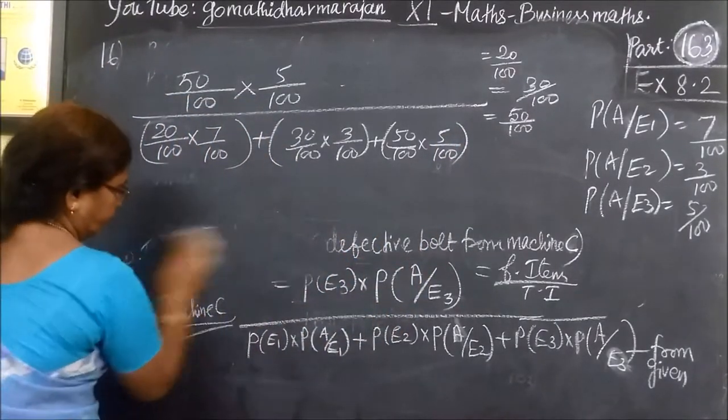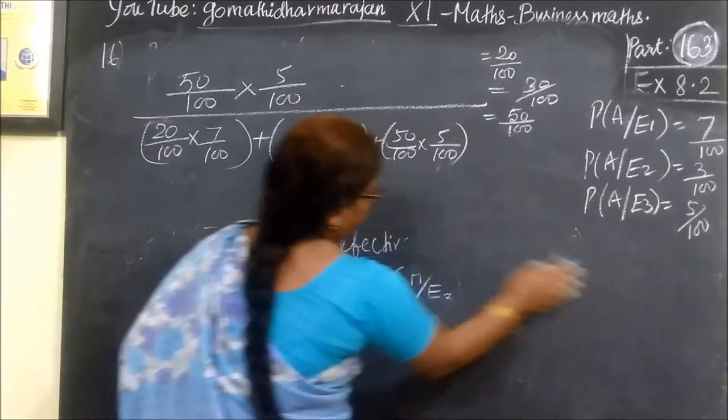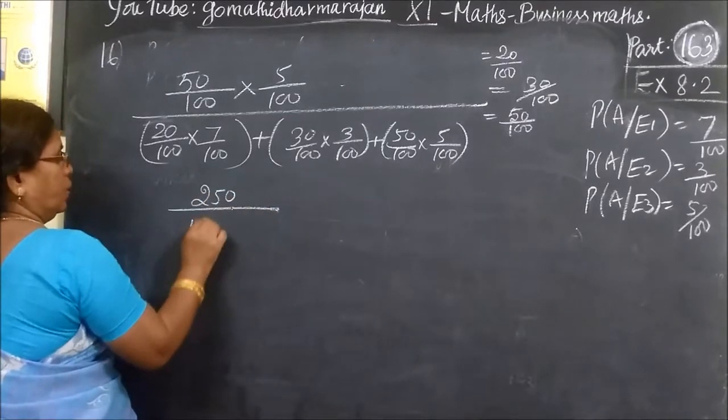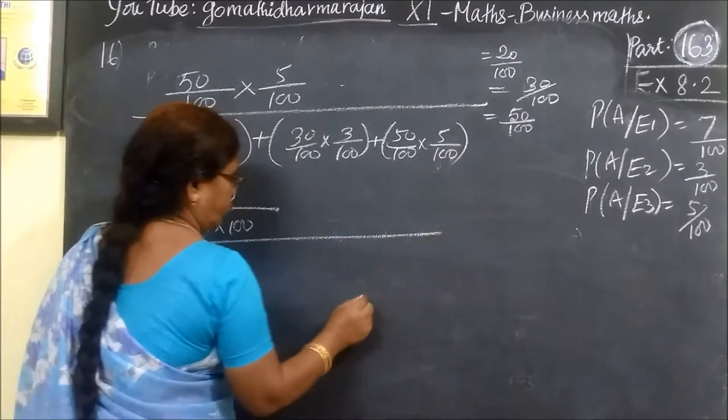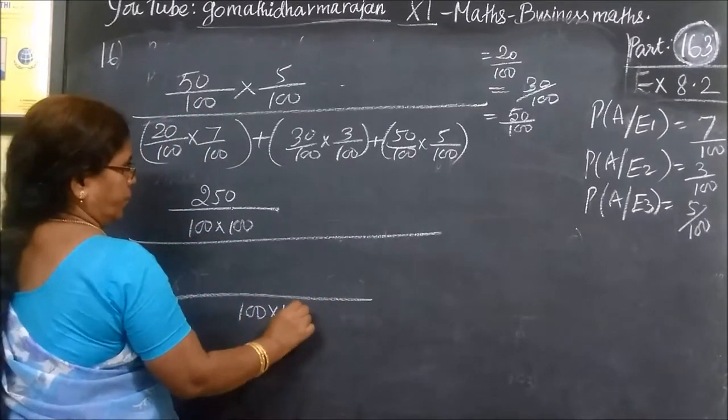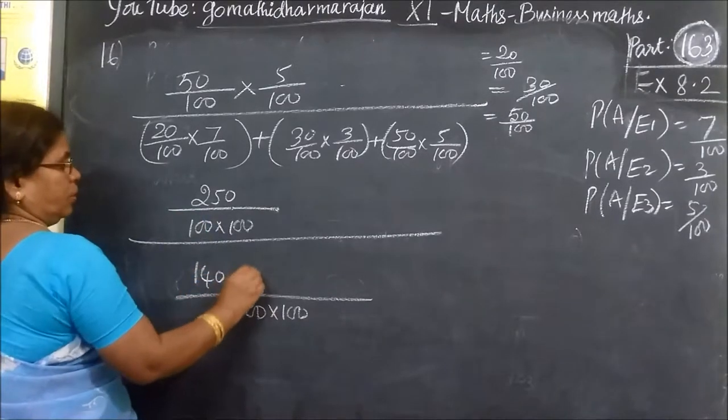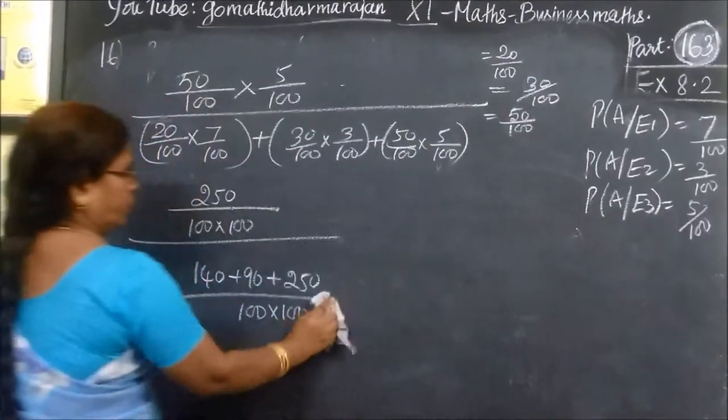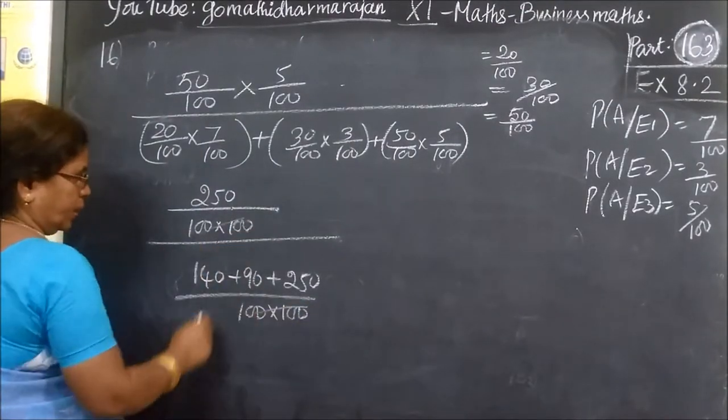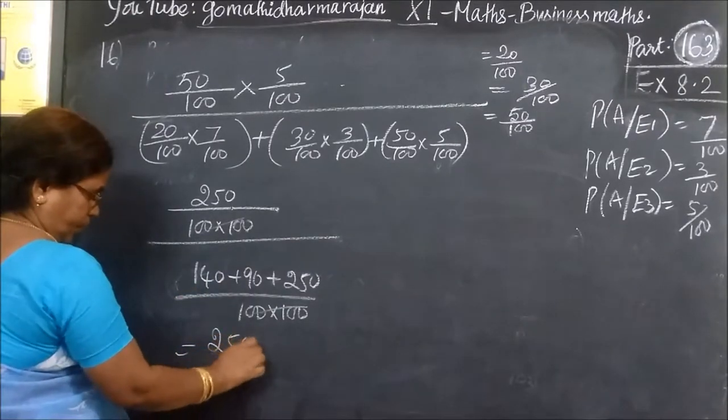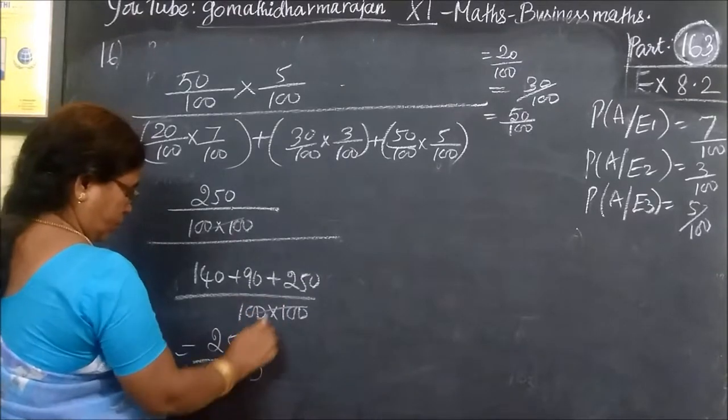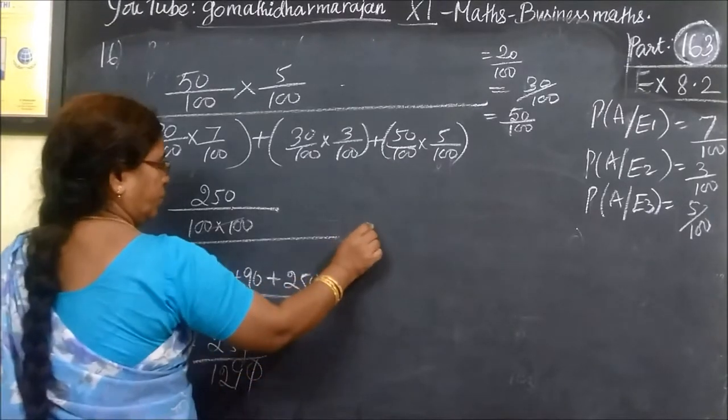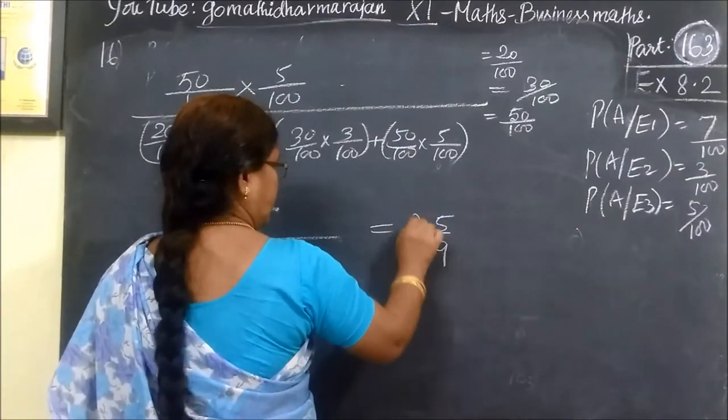This will be a simplification. This is equal to 250 by - the value of 100, then the value of 100. Now we have 140, then 90, then 250. This is equal to 50 by 100, then 50 by 100. Cancel. So the answer for this is 25 by 48.